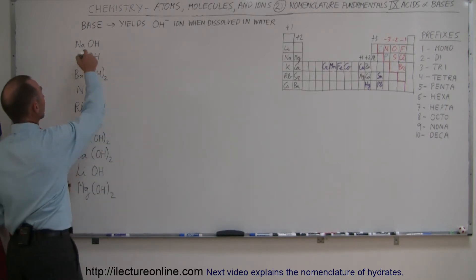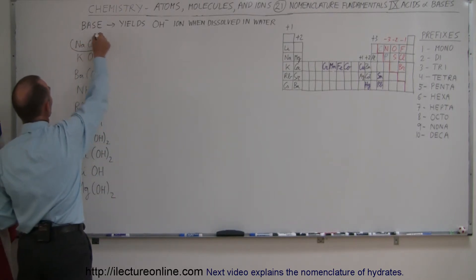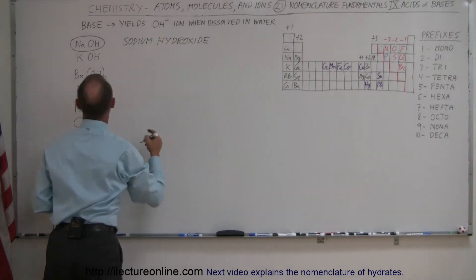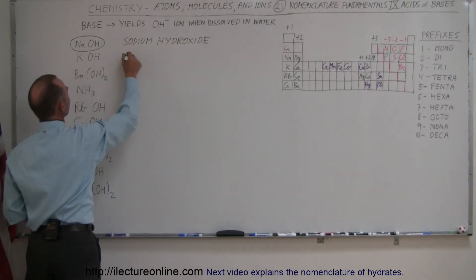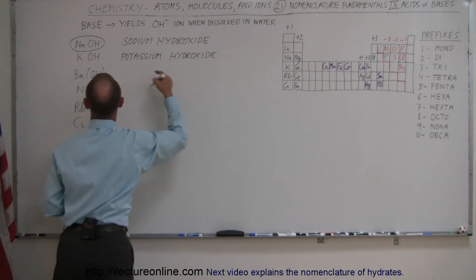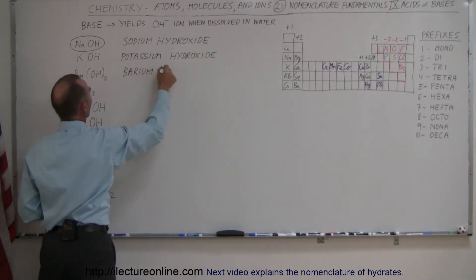So in the case of this compound right here, we call this sodium hydroxide. Here this would be potassium hydroxide, and I think you'll see the pattern pretty soon. Here we have barium hydroxide.